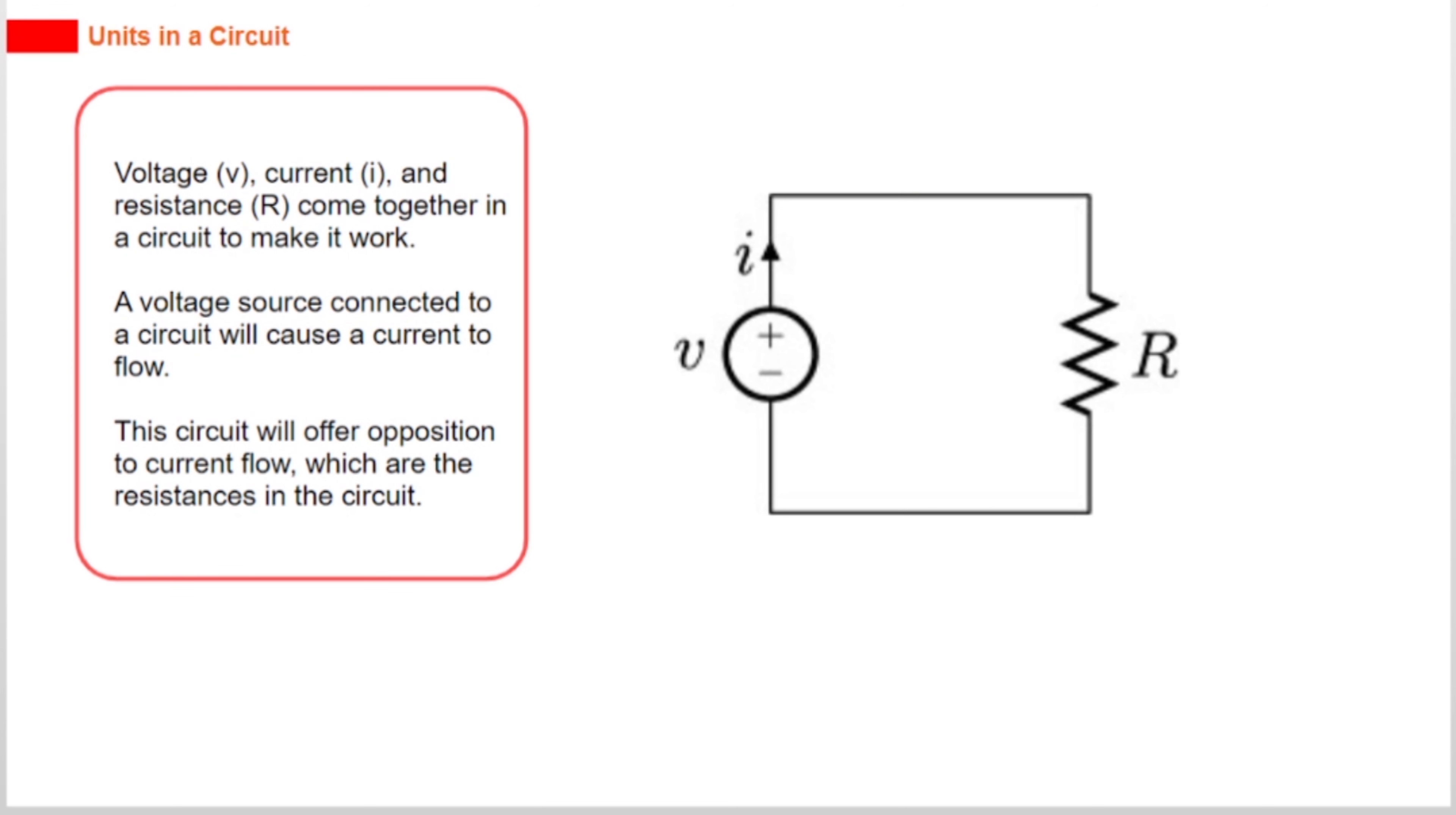Voltage V, current I, and resistance R come together in a circuit to make it work. A voltage source connected to a circuit will cause a current to flow. This circuit will offer opposition to current flow, which are the resistances in the circuit.